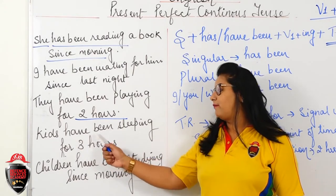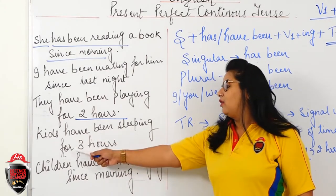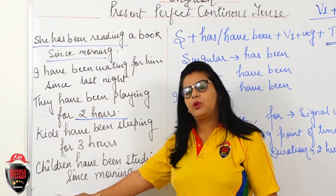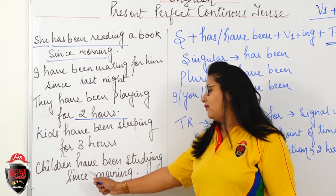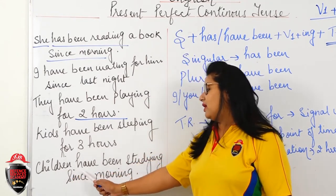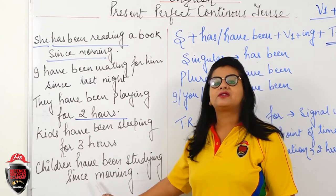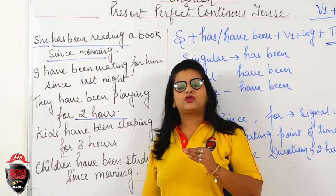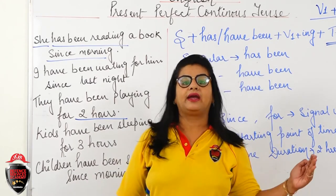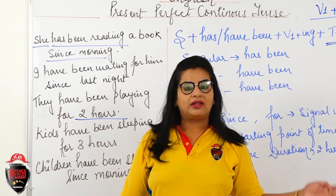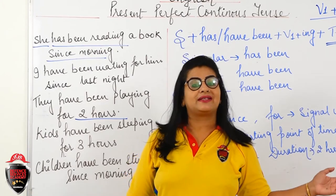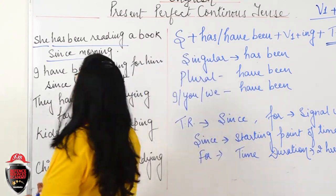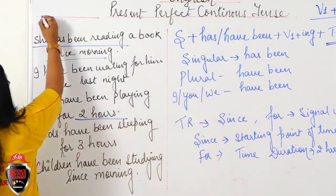Children have been sleeping for three hours — children is plural, so 'have' is used. Children have been studying since morning — starting point, so 'since' is used. These were examples of affirmative sentences.